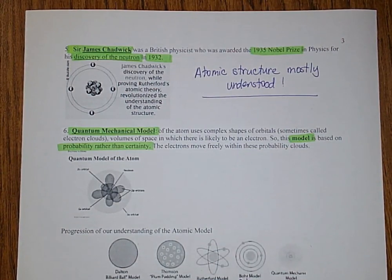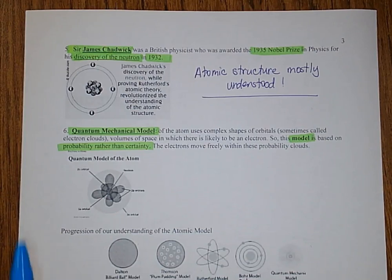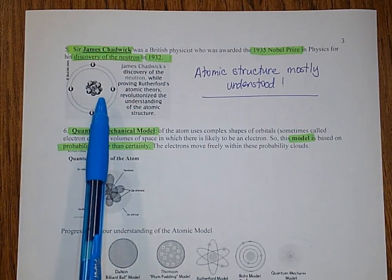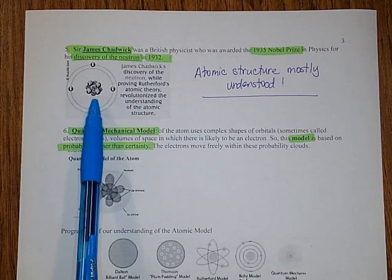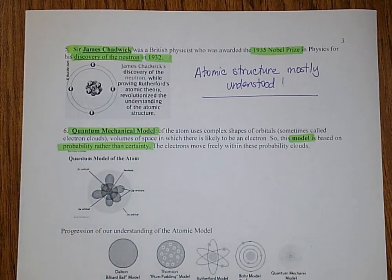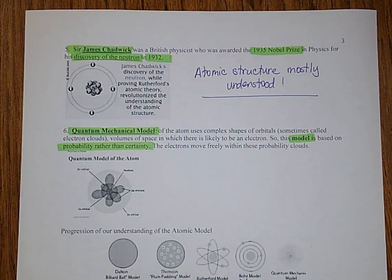The last scientist we have is Sir James Chadwick, who discovered neutrons in 1932. He discovered that inside the nucleus you not only have protons but also neutrons. This now concludes our basic understanding of the atomic structure — from Chadwick and other scientists' discoveries, we learned what the atomic structure consists of.